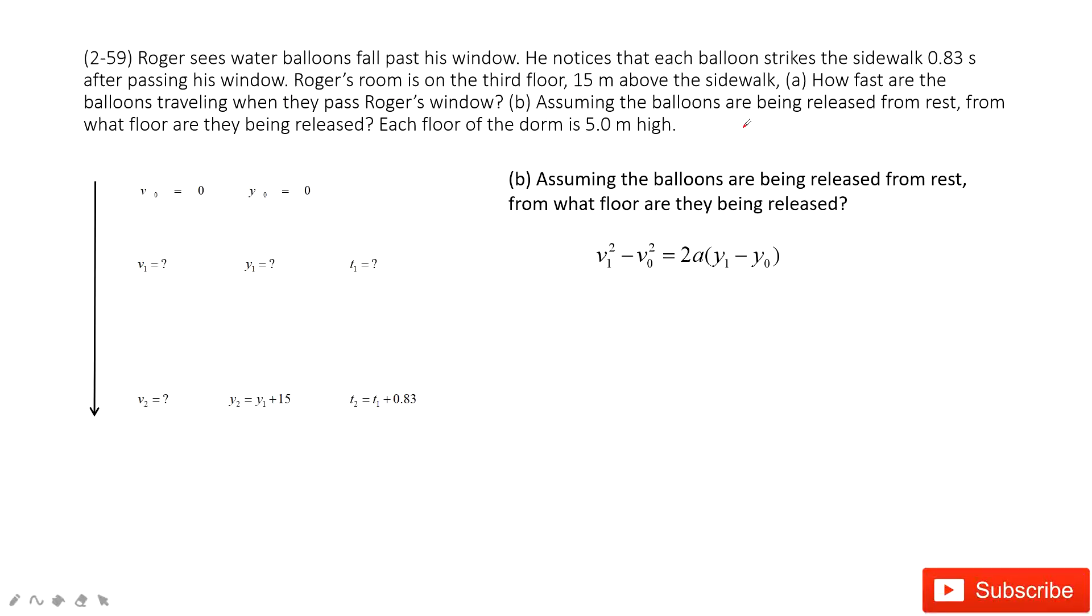Assuming this ball is being released from stationary, from what floor is it being released? We need to find Y2 and Y1. First, let's look at Y1. From the initial position which is 0, initial velocity and initial position are zero, we can find Y1. Because V1 is given, we can solve: Y1 = V1²/(2g). And Y2 is just Y1 plus 15 meters. When we put it inside, we find it is 35 meters. Each floor is 5 meters, so 35 meters is just 7 floors.